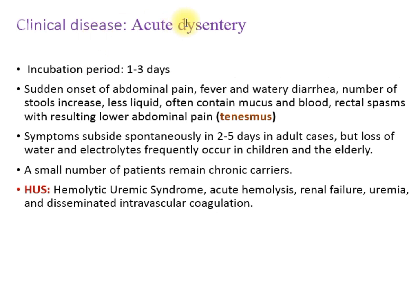The clinical disease — acute dysentery — has an incubation period as short as one to three days. Clinically, the patient complains of abdominal pain, fever, watery diarrhea with increased stool frequency. The stool contains mucus and blood. There can be spasm in the rectum and a gripping lower abdominal pain called tenesmus. Symptoms usually subside in two to five days in adults, though children and elderly may suffer greater loss of water and electrolytes.